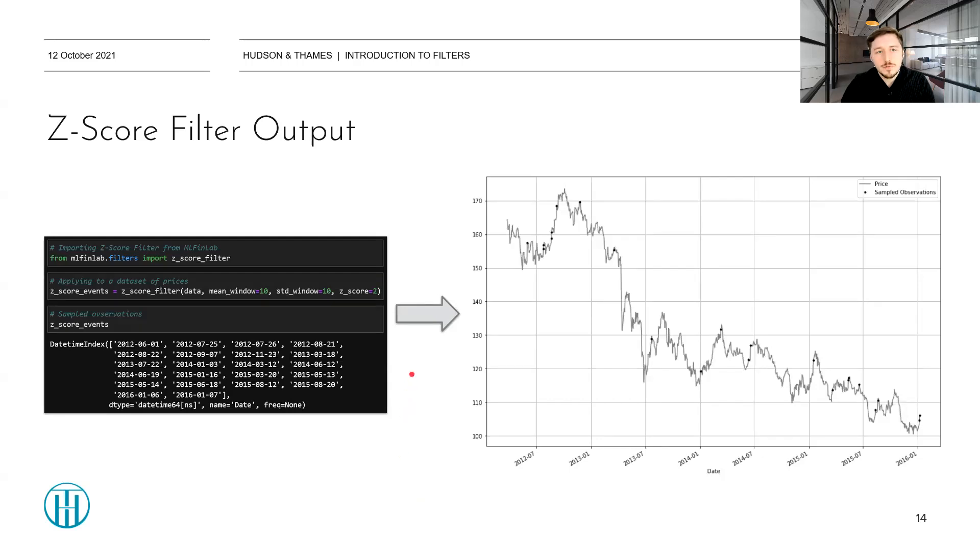And this is how the Z-score filter can be used from the MLFinLab package. First, again, we're importing it from the filters module of the MLFinLab package. Then we can apply it to a dataset. In this case, it is exactly the same dataset, set of prices of the GLD ETF from 2012 to 2016, with the lag or window and standard deviation window equal to 10 and the Z-score or threshold being equal to 2. In this case, we're assuming that the influence term is equal to 1. The Z-score events are therefore as following and we're able to plot them alongside the original price series. And the events recorded are very different from the ones recorded in the CUSUM filter.